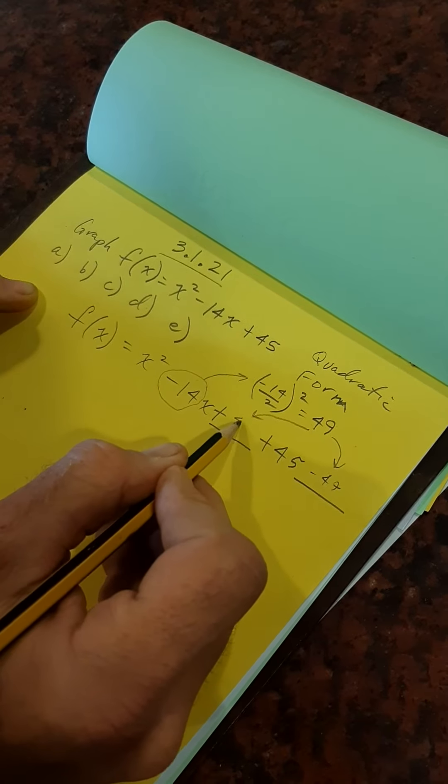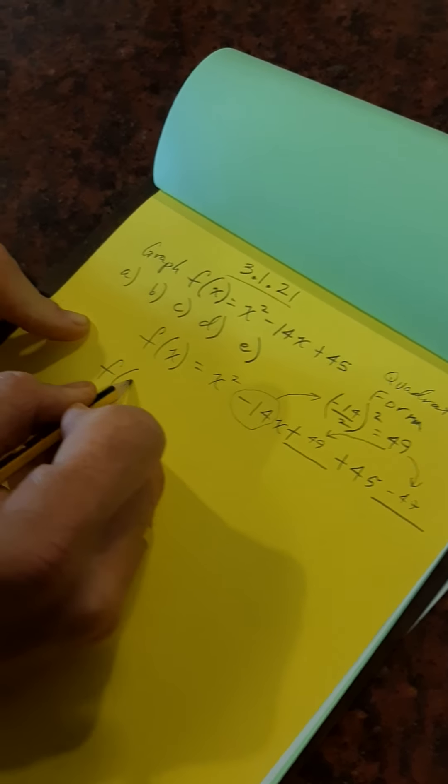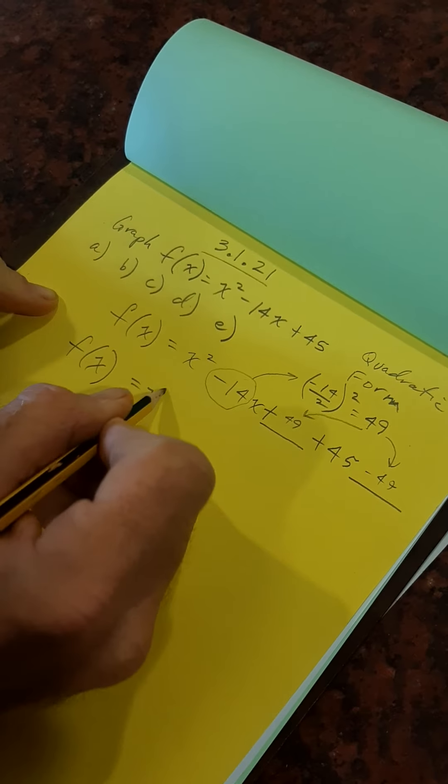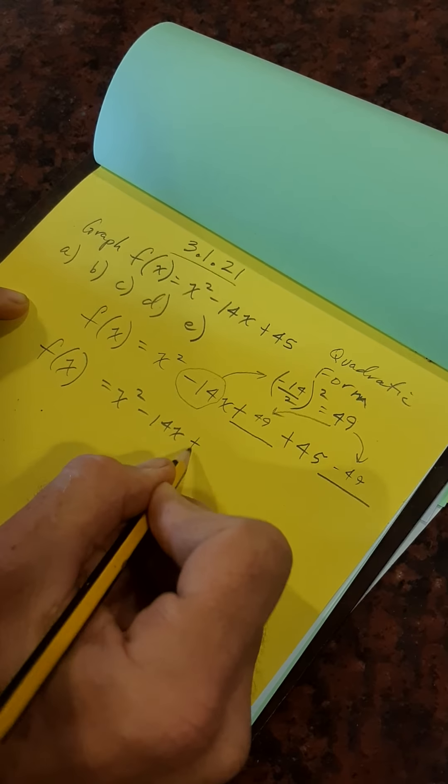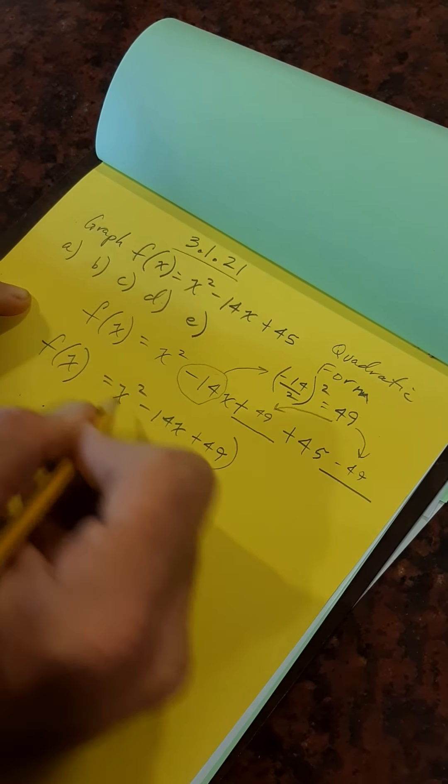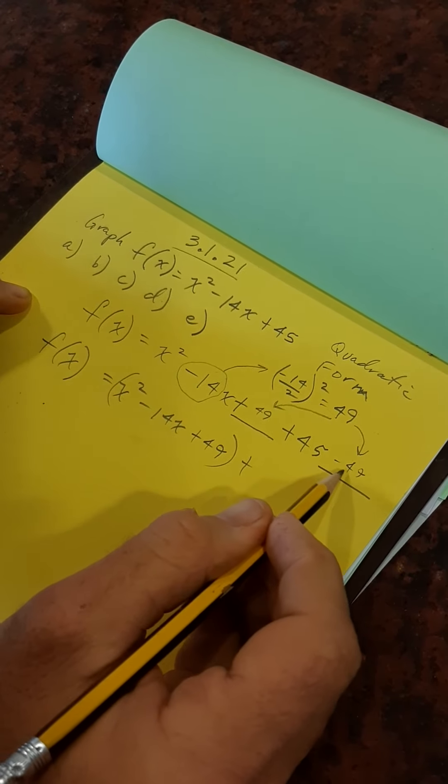That 49 goes right here as a plus. And then to balance out things, I put the minus 49 here. Plus 49 here. So let's rewrite that.